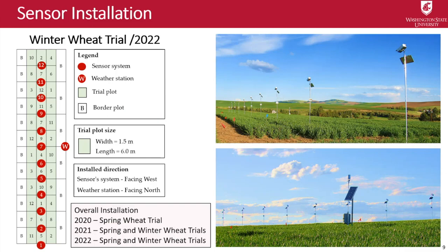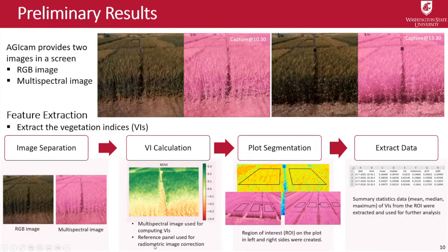This is the layout of one field where we installed the cameras, which we deployed in 2022. We deployed our automated cameras in these trials. Overall, we have three seasons of camera installation in the field, covering both spring and winter wheat trials.